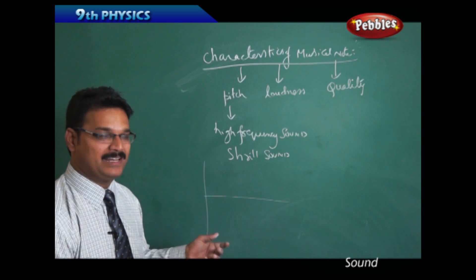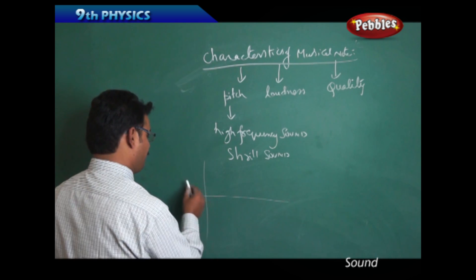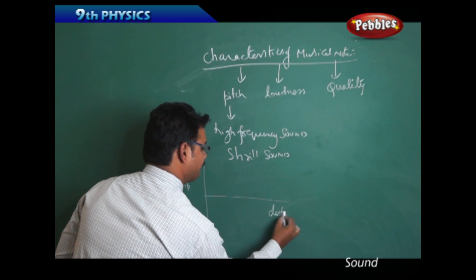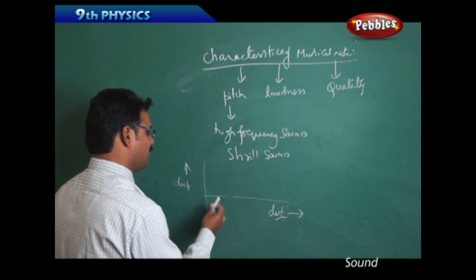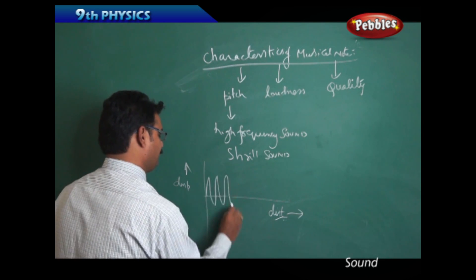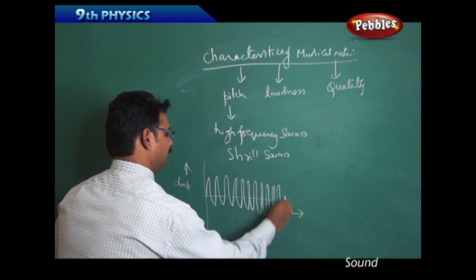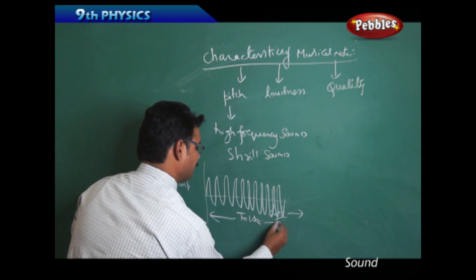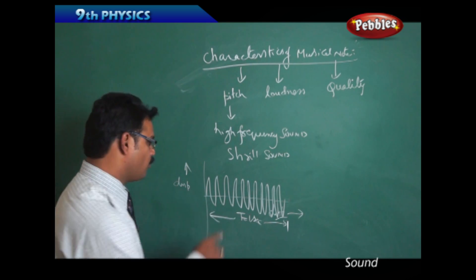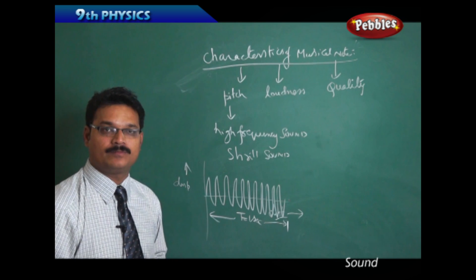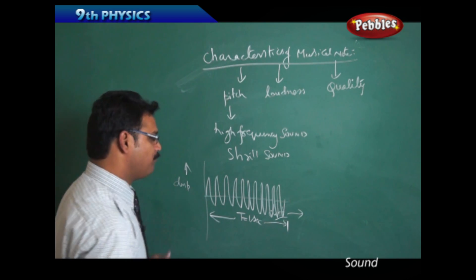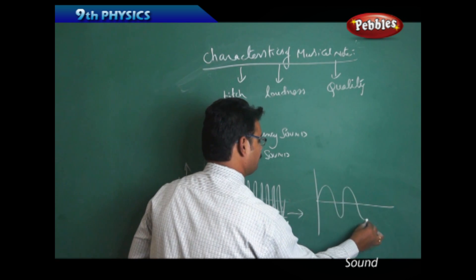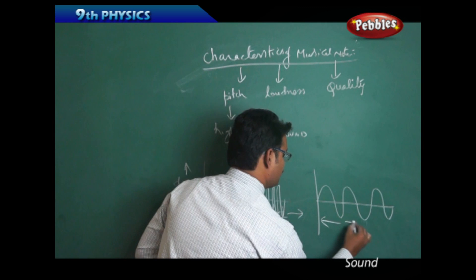If you want to show high frequency sound graphically, taking displacement on the y-axis and distance on the x-axis, high frequency sound looks like this — many waves packed closely in one second. That is high pitch. For low pitch, the waves are spread out and fewer in number over the same time period of one second. This is low pitch sound.